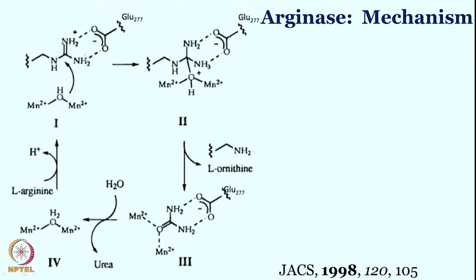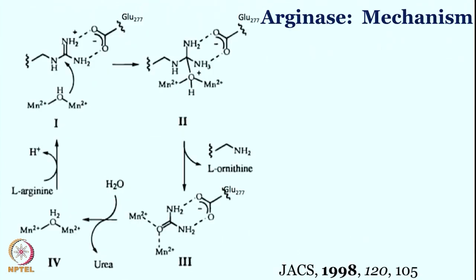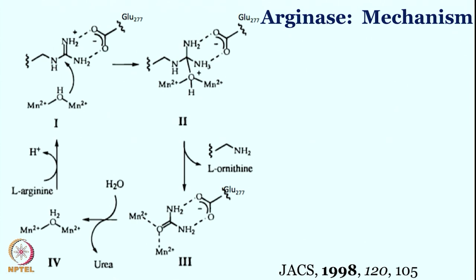This is L-arginine where we start, with manganese 2+ bridged by hydroxo. This hydroxo is going to attack the electrophilic center, but it is helped to be positioned perfectly by glutamate 277. Without this glutamate 277 we cannot have perfect positioning of L-arginine. So not only the active site is important — side chains are also critical, significantly enhancing the rate of the reaction through the substrate binding pocket and multiple hydrogen bonding involved there.